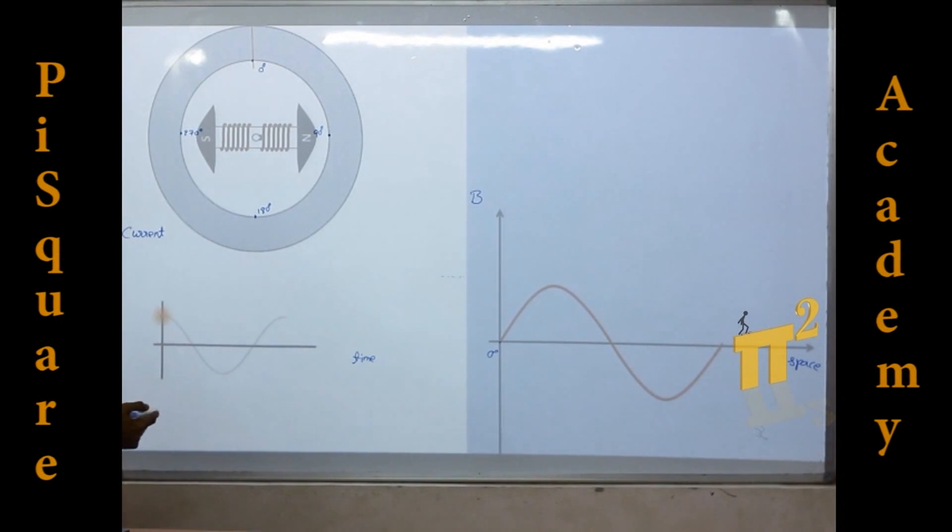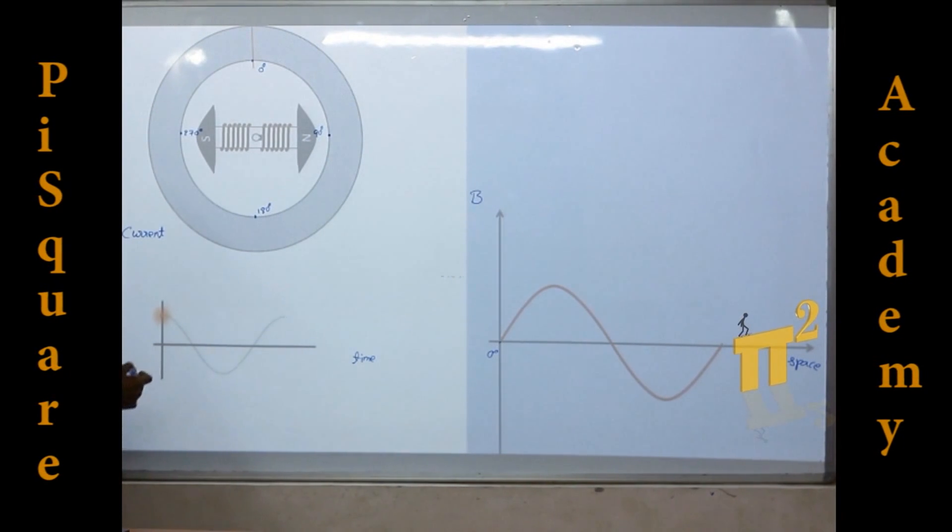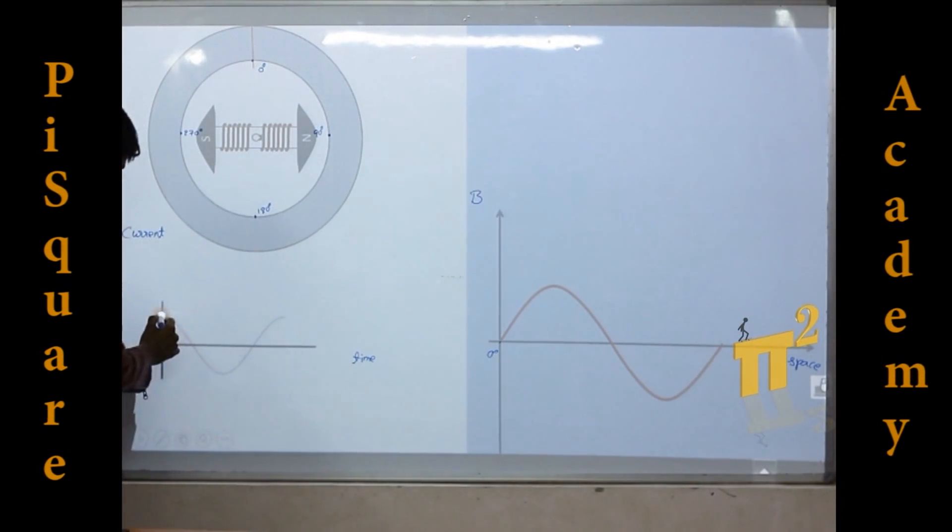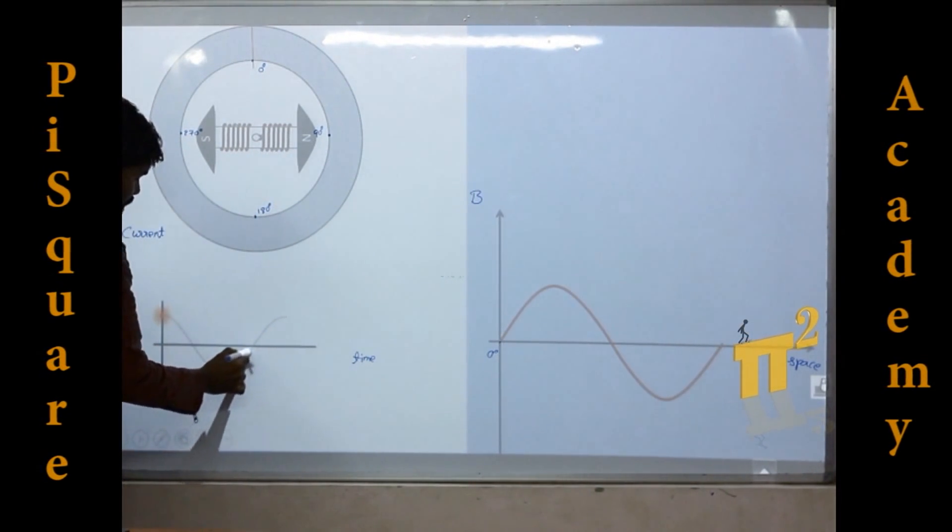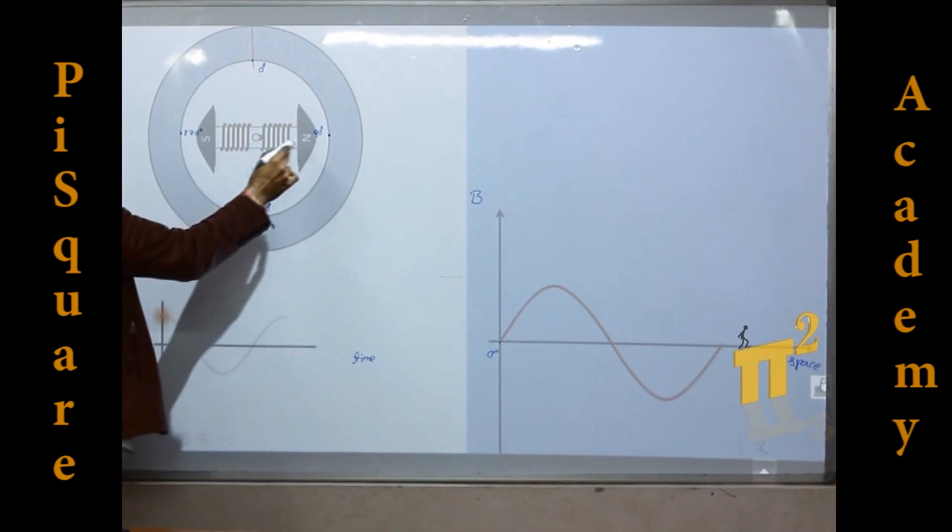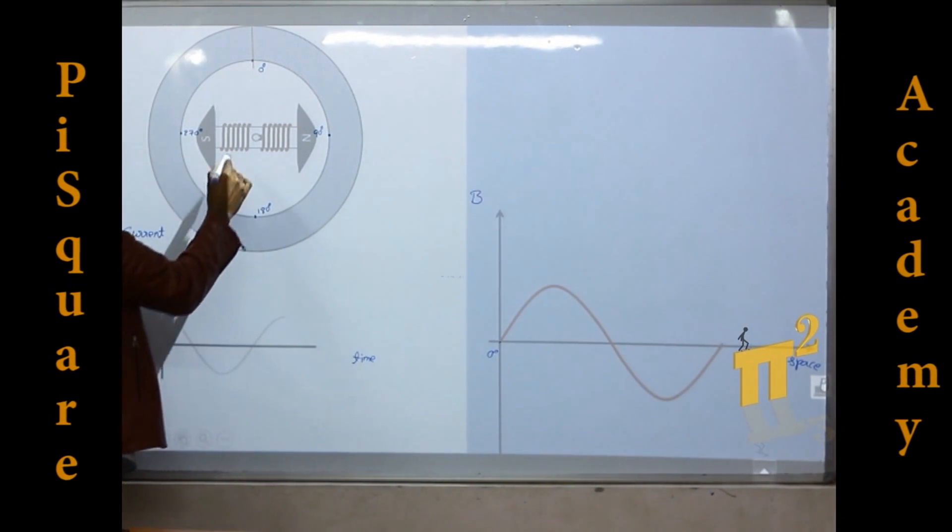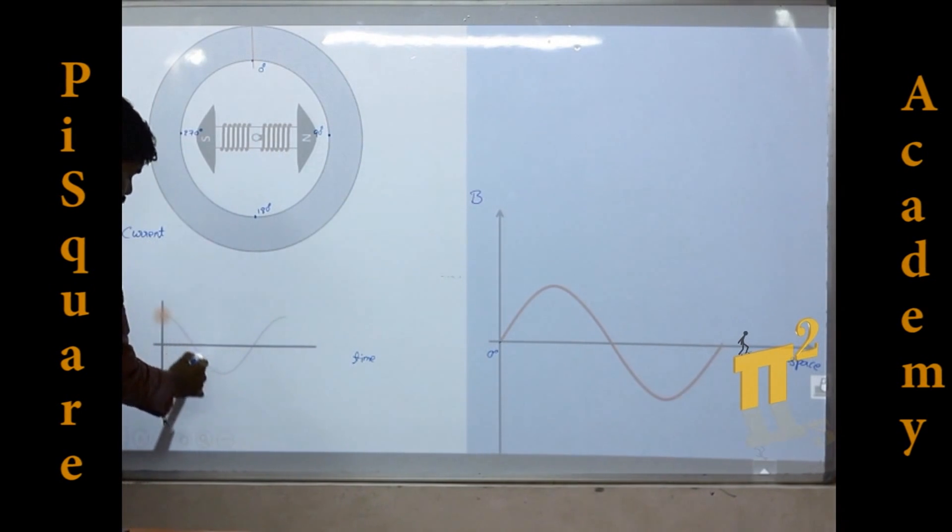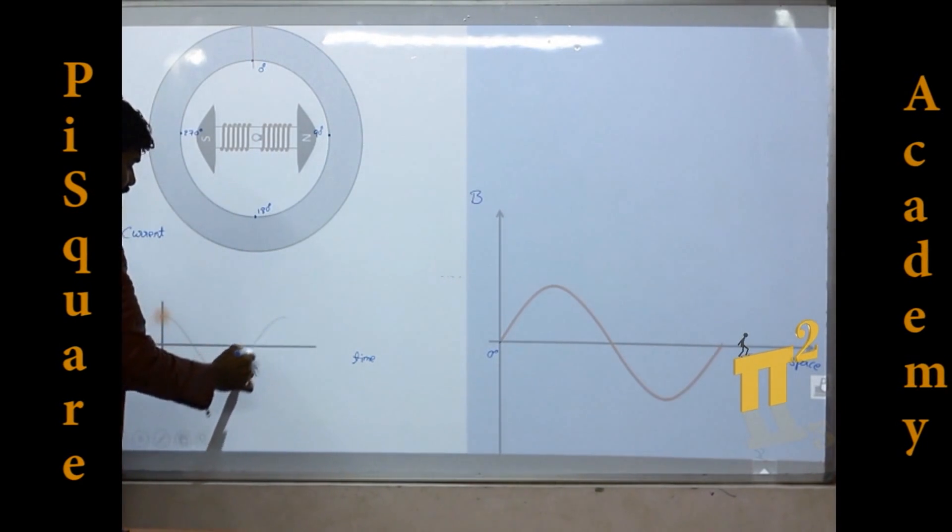Now if current flowing through this coil is sinusoidal, then what will happen? My rotor is not moving, but the current which is fed to this coil is changing with respect to time in this fashion.